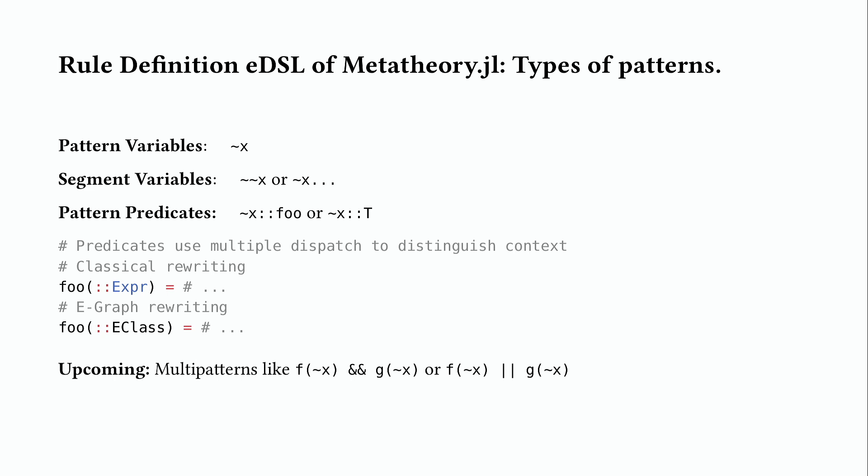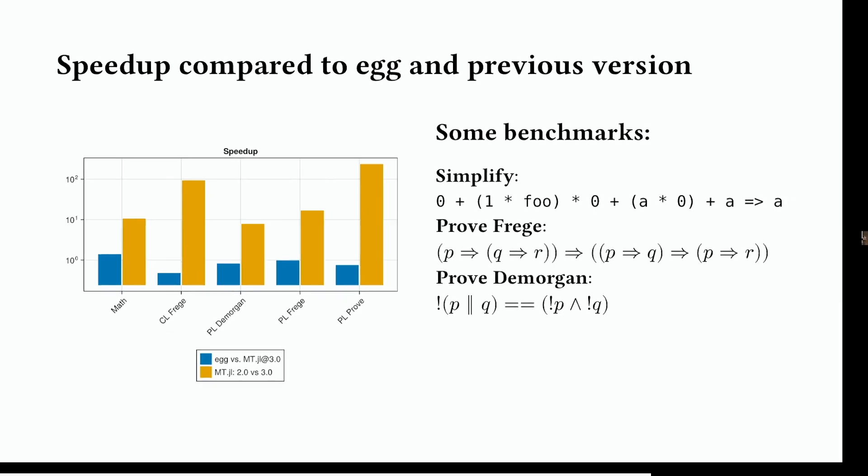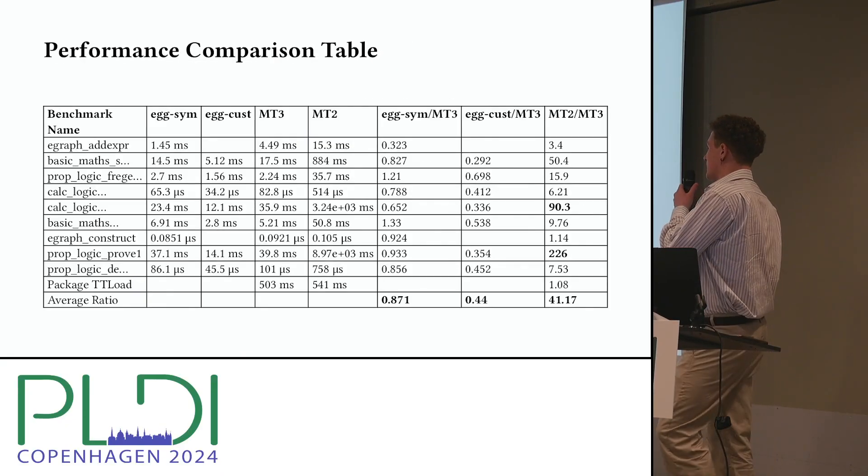Niklas helped with lots of benchmarks. The yellow bars show the old version; the blue bars show the new Metatheory.jl compared to egg using the generic symbol language. Benchmarks include propositional logic theorem proving and math simplification. We're around 200 times faster than the previous version and are pretty much reaching egg's performance — that's very exciting.